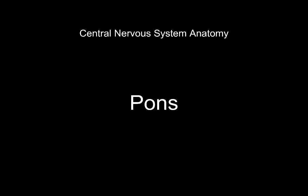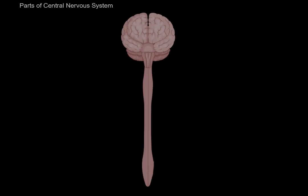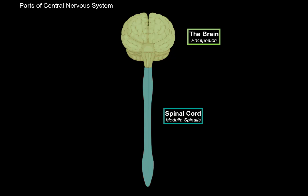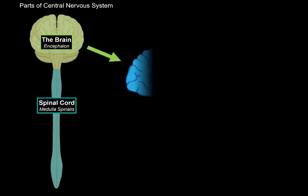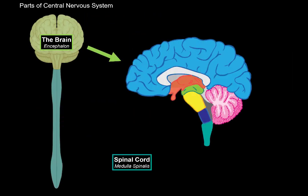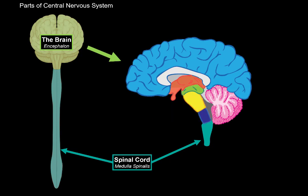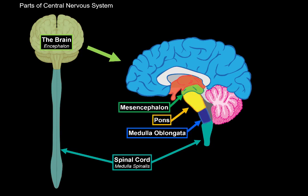What's up, Merite here. Let's continue the anatomy of the central nervous system. In this segment, we will cover the complete anatomy of the pons. The central nervous system consists of two parts: the encephalon and the spinal cord. The encephalon is further subdivided into specific parts. We have the brain stem, which consists of the medulla, pons, and the midbrain, or the mesencephalon.